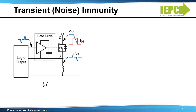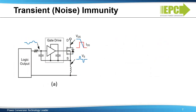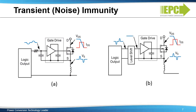The best way to avoid ground bounce is to place the controller on the same ground as the gate driver, as shown in figure B. In applications with multiple low-side switching devices, there are two ways to address ground bounce. First, the ground bounce noise can be filtered out by placing a small RC low-pass filter between the controller and the gate driver, as seen in figure A. The second alternative solution is to use a level shifter or isolator between the controller and gate driver, as shown in figure B.